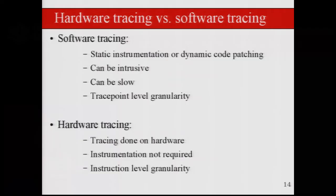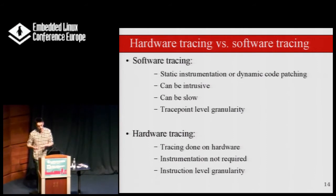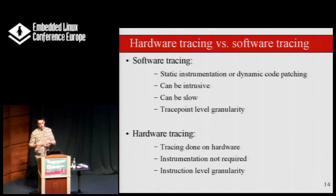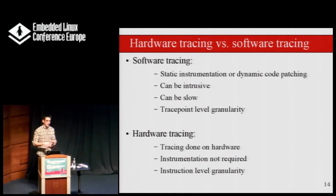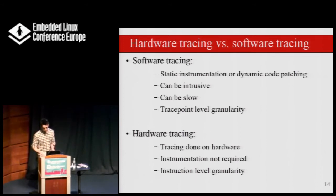What is really the difference between hardware tracing and software tracing? In software tracing, most of the time you need to statically instrument your code or dynamically do code patching, which can be intrusive and slow, and the granularity is at the trace point level. Even on Linux, tracing the whole block I/O layer generates a lot of data. In hardware tracing, no instrumentation is required, so you can run uninstrumented programs and get information about their behavior and performance characteristics, but you get instruction-level granularity — so much data that you sometimes need to filter it.